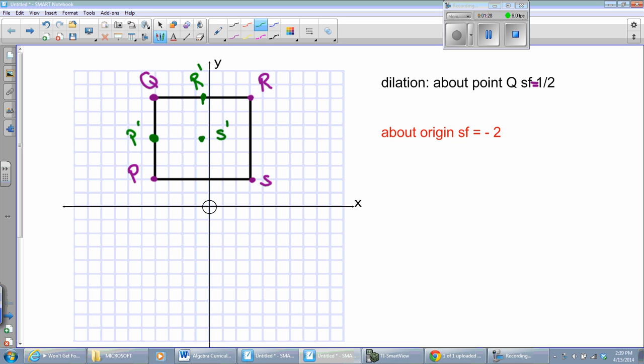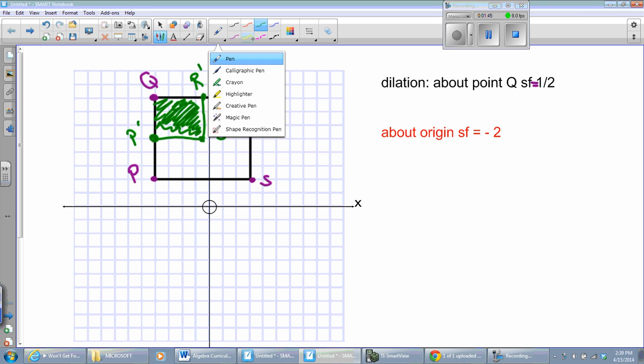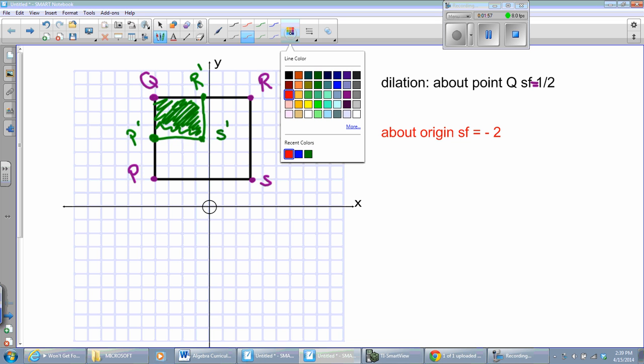So, this new rectangle will be like this, right? There you go. That's it. Piece of cake. When it's about the point, it doesn't move. All right, so now I'm going to do the original one, dilate the original one,